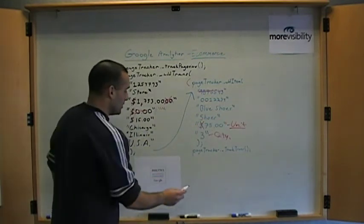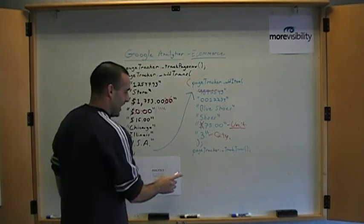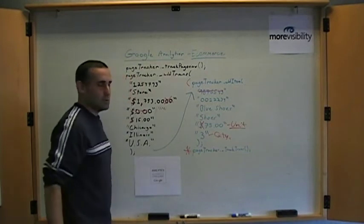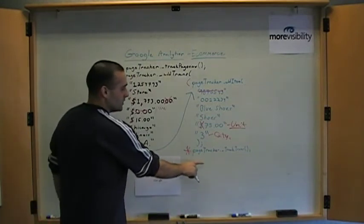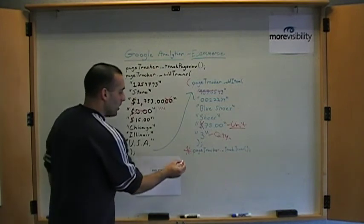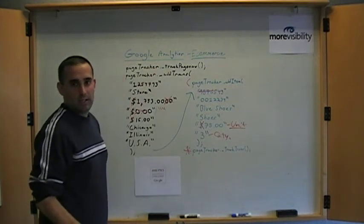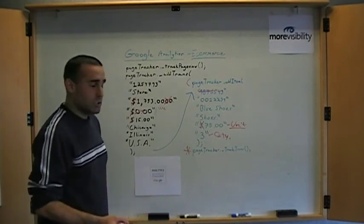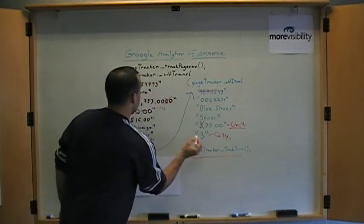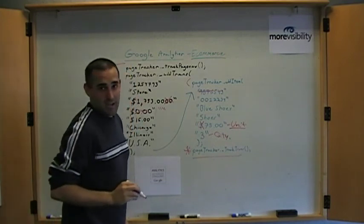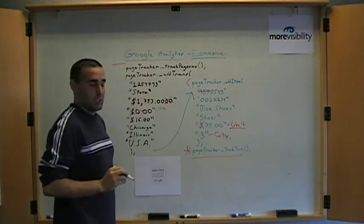Finally, this is very important. The track trans call—this is what makes it all happen. This call sends all of this data to the Google Analytics servers, and it must be called after the regular Google Analytics tracking code. So if you use the track page view function, all of this stuff here has to happen after the track page view function.